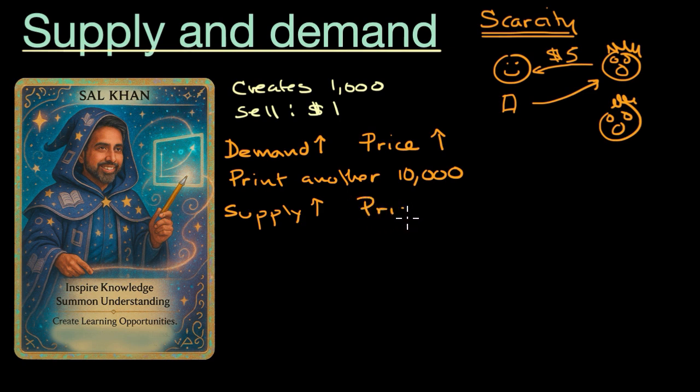Well, the price is going to come down. Yes, there still might be a lot of people who want it, but there's also a lot more people who have the cards, or each person has more of these cards. So they might not bid the prices up as high. So maybe the price comes down to two dollars.